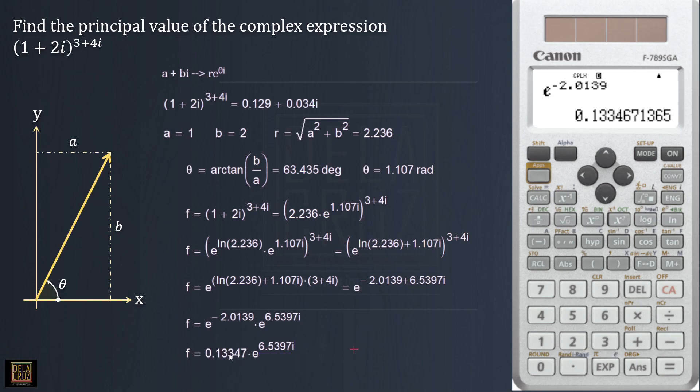We can now return this one to rectangular. Actually, this one can be directly changed to rectangular form using the calculator. Take note that this one is the theta in radians. If you want to have that one in theta in degrees, just multiply that one to 180 degrees per pi. That's 6.5397 - just multiply it to 180 degrees per pi radians. That one in degrees, that's 374.6997 degrees.